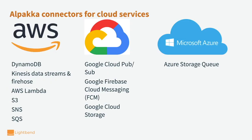Alpaca contains connectors to different cloud service technologies. It integrates with DynamoDB, Kinesis, AWS Lambda, S3 (which is very popular), SNS, and SQS. Google Cloud technologies are supported for PubSub, Google Firebase, FCM, and Google Cloud Storage, which was recently added. For Microsoft Azure, there is an integration with StorageQ.